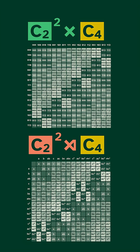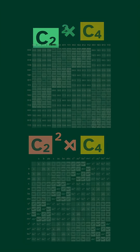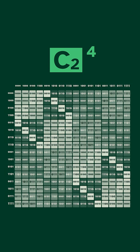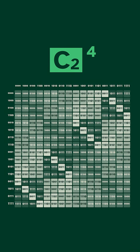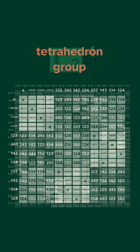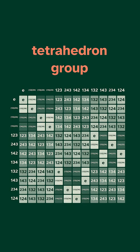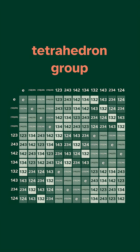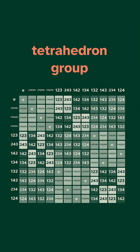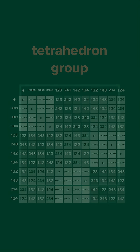And for some final fun examples, let's look at C2 tesseracted, and the tetrahedron group. Follow the link in the comments to try some more yourself.